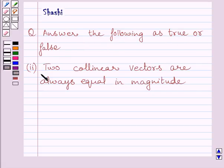The given statement is: two collinear vectors are always equal in magnitude. Let us now start with the solution.